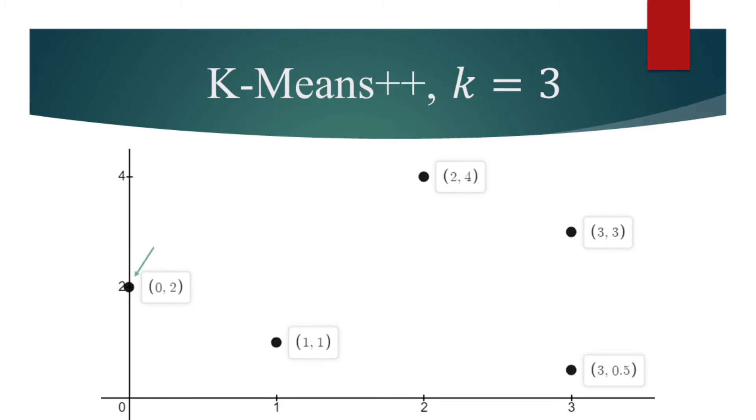Let's say we chose the first centroid to be at the leftmost data point. Each subsequent centroid will be chosen based on how far they are from their nearest centroid.